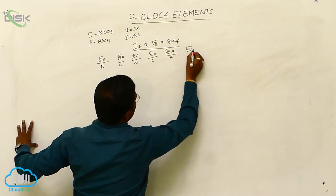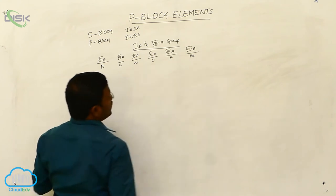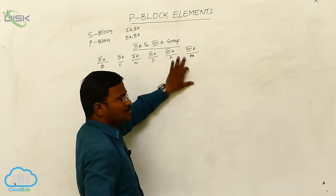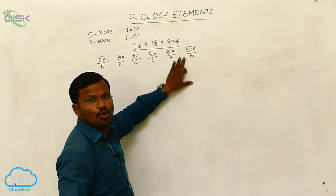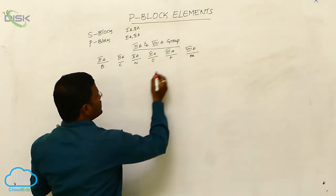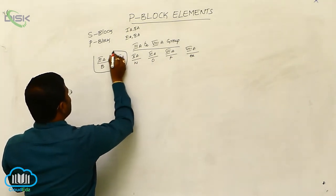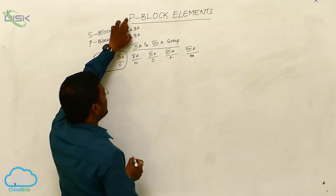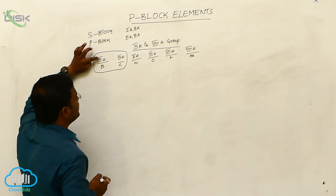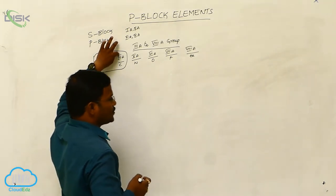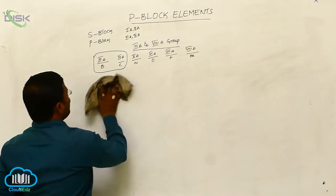The 8th A-Group Elements are called the Helium Family. The 8th A-Group or 0-Group Elements are also called Inert Gases or Noble Gases. Out of the 6 groups under P-Block Elements, the first 2 groups — that is 3rd A-Group and 4th A-Group — were completed during the 1st year course. Let us now learn the remaining elements.